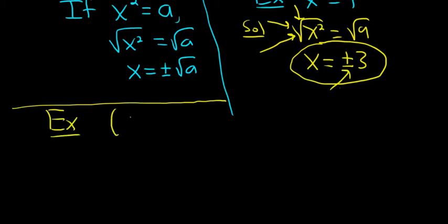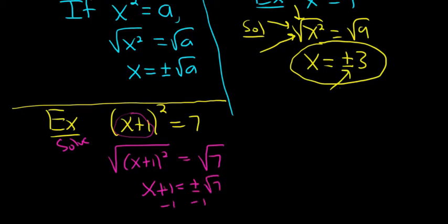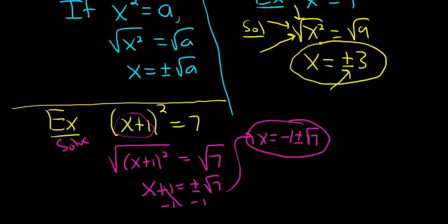Another example: say we had (x plus 1) squared equals 7. Again, we have something squared equal to a number, so we take the square root of both sides. The square goes away, giving x plus 1 equals plus or minus square root of 7. To finish, subtract 1: x equals negative 1 plus or minus square root of 7. So if you have something squared equal to a number, take the square root — and when you take the square root of a variable squared, you always get a plus or minus.